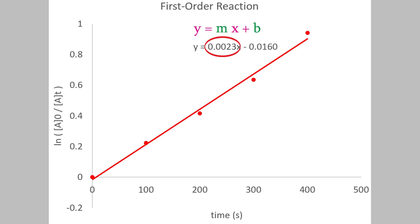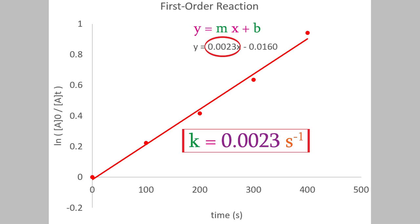Since our times were all in seconds, that means the units for k are seconds to the minus 1. So now we know the rate constant. This is a very common way of figuring out the rate constant of a new reaction when we discover one during our research.